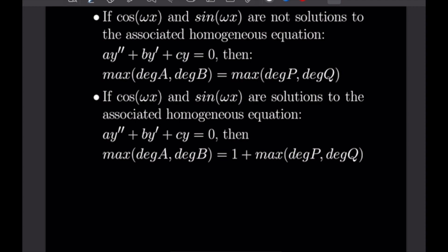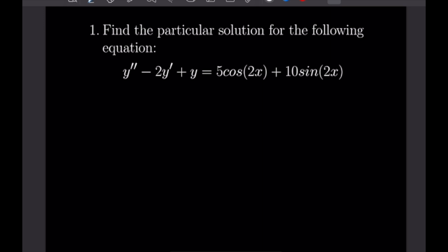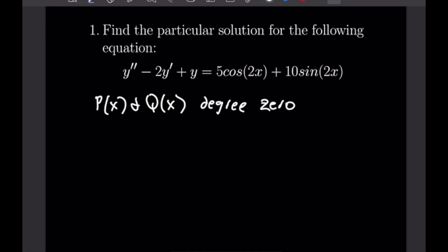So that gives us something to check before we go through our solution process. For example 1, find the particular solution for Y'' - 2Y' + Y = 5cos(2x) + 10sin(2x). Right away we notice that the coefficients P(x) and Q(x) are both degree 0 polynomials. Assuming cos(ωx) and sin(ωx) are not solutions to the homogeneous equation, we can write Y_p = A·cos(2x) + B·sin(2x).